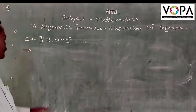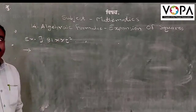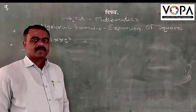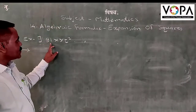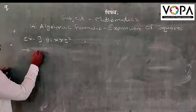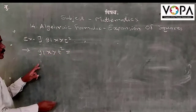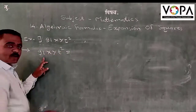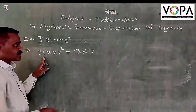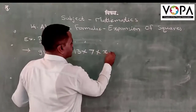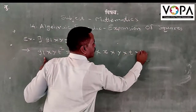Let us see one example: 91xyt². So, 91xyt² is equal to — the factors of 91 are 13 into 7, so 13 into 7 into x into y into t into t.